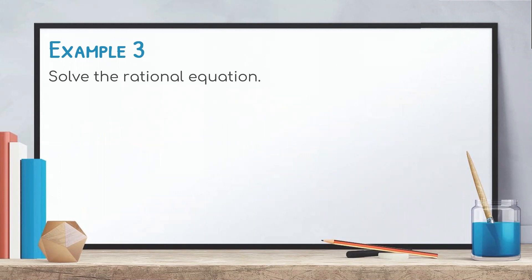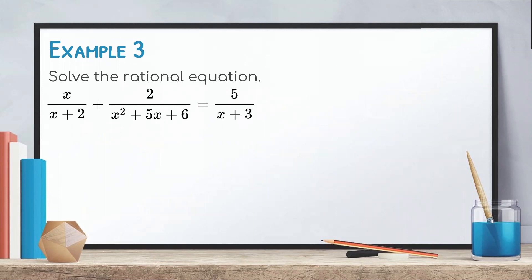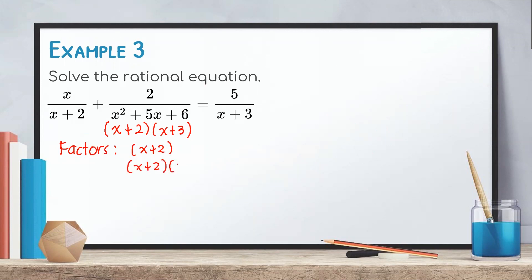For our last example, solve the rational equation x/(x + 2) + 2/(x² + 5x + 6) = 5/(x + 3). To determine the LCD, let us factor the denominator of the second rational expression: x² + 5x + 6 = (x + 2)(x + 3). Therefore, the factors of our denominators are (x + 2), (x + 2)(x + 3), and (x + 3). Since (x + 2) and (x + 3) are duplicated, we consider each only once, so the LCD is (x + 2)(x + 3).